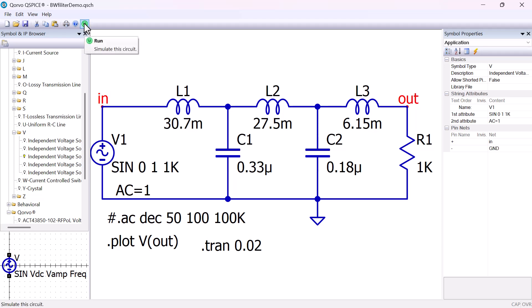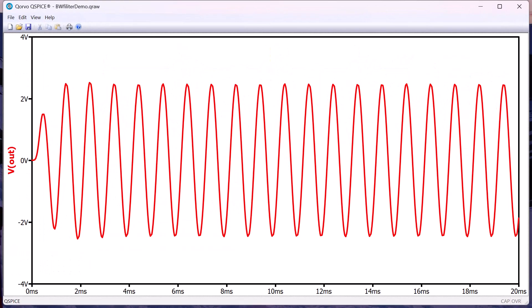Run the simulation. We get a transient plot of the AC time domain source voltage.